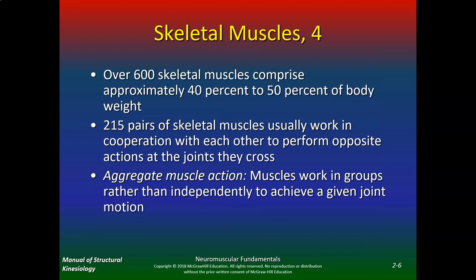Since you've had anatomy before, you are responsible for these muscles. No origin insertion, but I may ask you actions, location, et cetera. There's over 600 skeletal muscles comprising approximately 40% to 50% of your body weight. There are 215 pairs of skeletal muscles that usually work in cooperation with each other to perform opposite actions at the joints they cross — aggregate muscle action.